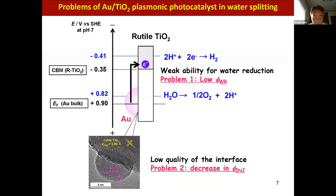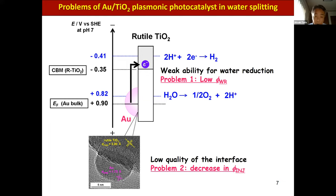For water splitting by the Au/TiO2 plasmonic photocatalysis, there are two problems. One is that the conduction band edge of TiO2 is insufficient for the hydrogen evolution reaction. Also, as shown by this high-resolution TEM image of Au/TiO2, the interface is disordered at an atomic level, which can cause loss of electron injection from the gold nanoparticle to TiO2 due to interfacial recombination.